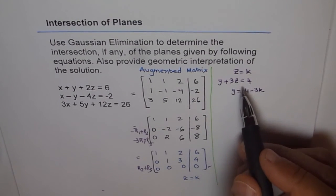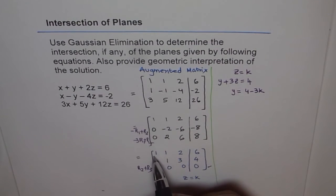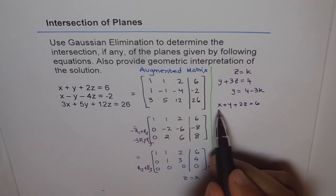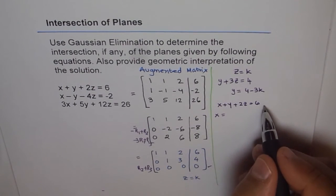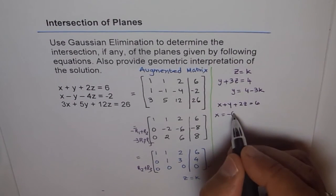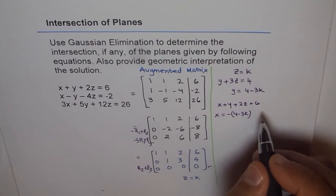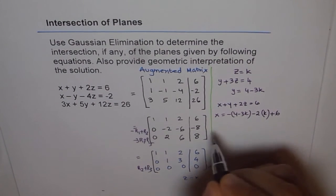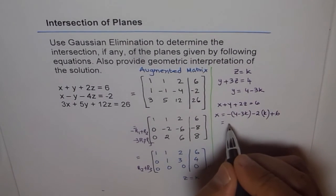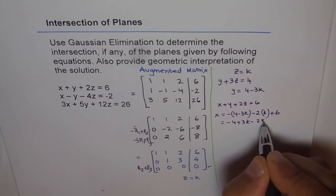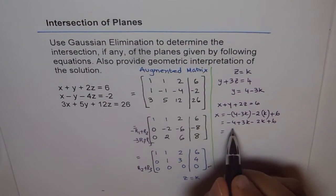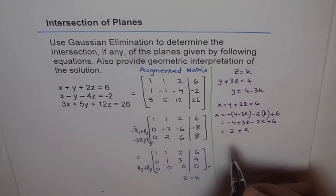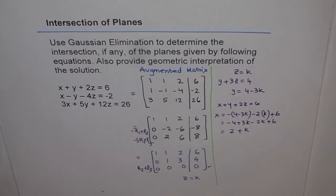Now looking at the first row: x plus y plus 2z equals 6. From here we can find x. x equals 6 minus y minus 2z. Substituting y equals 4 minus 3k and z equals k: x equals minus of (4 minus 3k) minus 2k plus 6. Opening the bracket: minus 4 plus 3k minus 2k plus 6, which gives x equals 2 plus k. So we have a parametric solution.